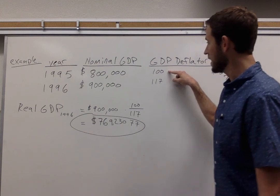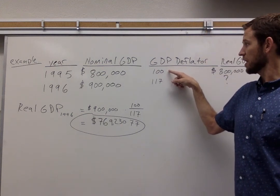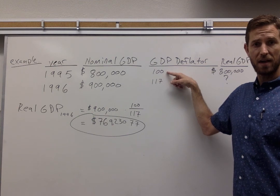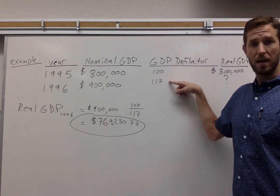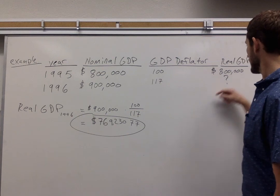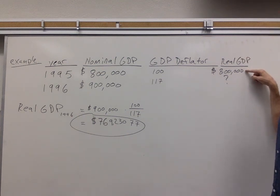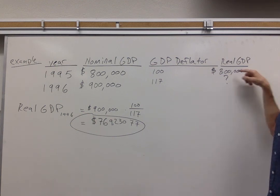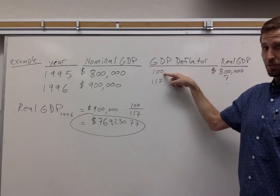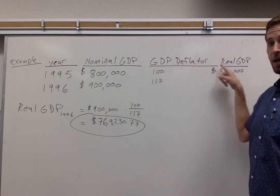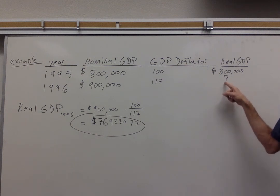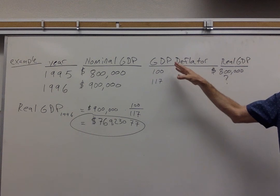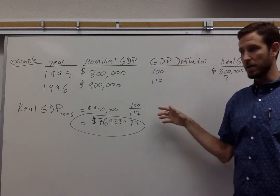Back to our problem at hand, we've got a price index given for our two years — set to 100 in 1995 and set at 117 in 1996. That's telling us, because this went up, that we did see some inflation. In the column on the right, we're going to have real GDP presented as $800,000 in 1995. For that base year, when the price index is set to 100, the principle is that nominal GDP and real GDP are going to be the same. We want to know what's happening to real GDP in 1996, so we take the numbers from the problem setup and apply the formula we learned.